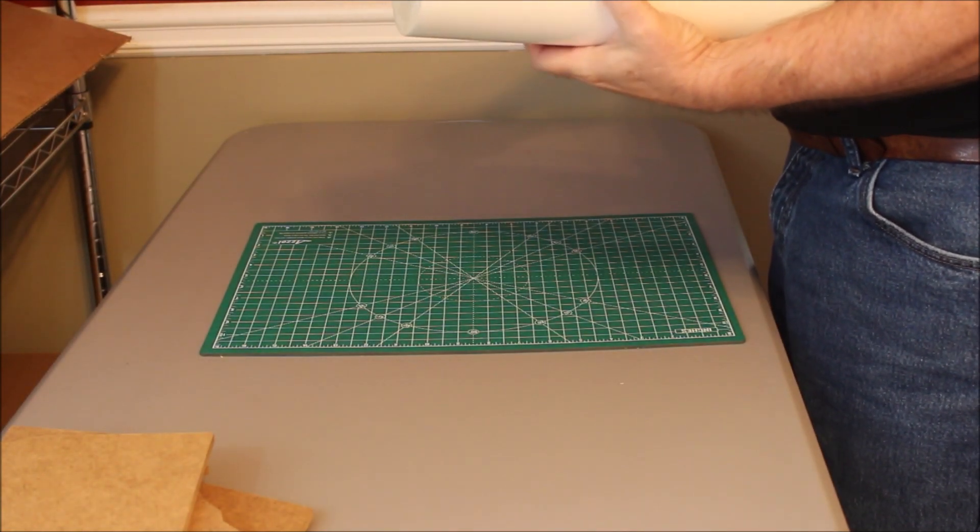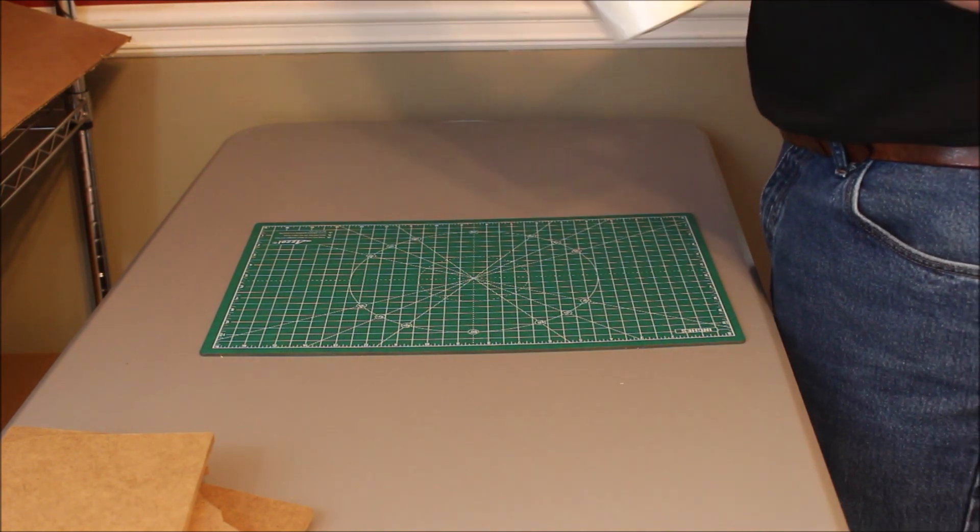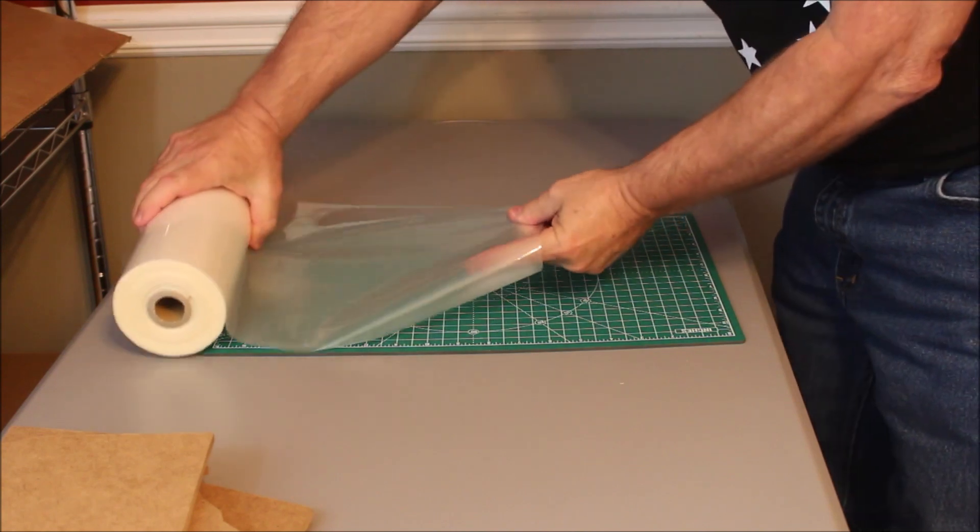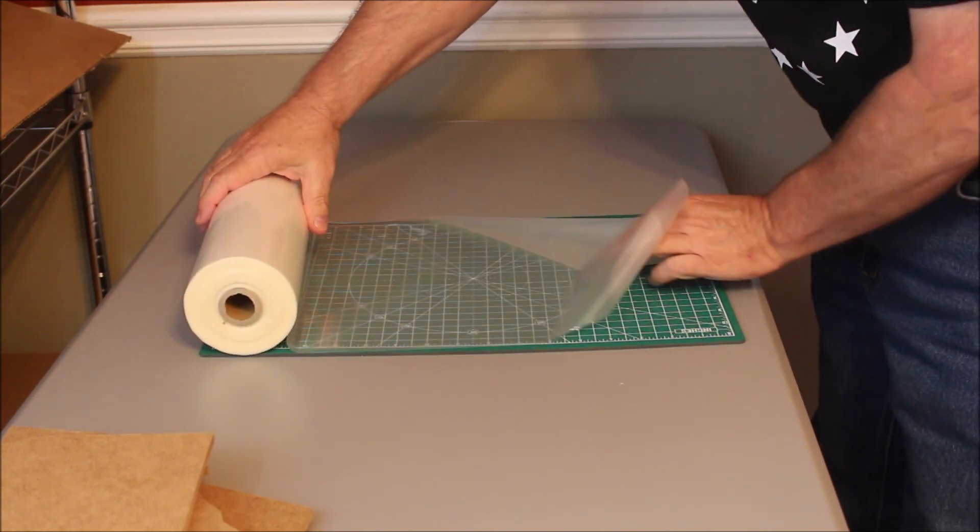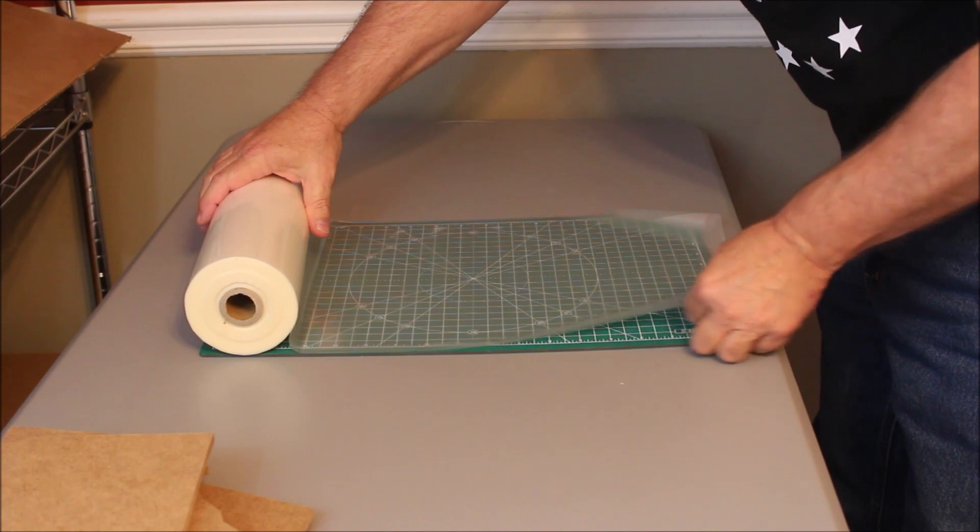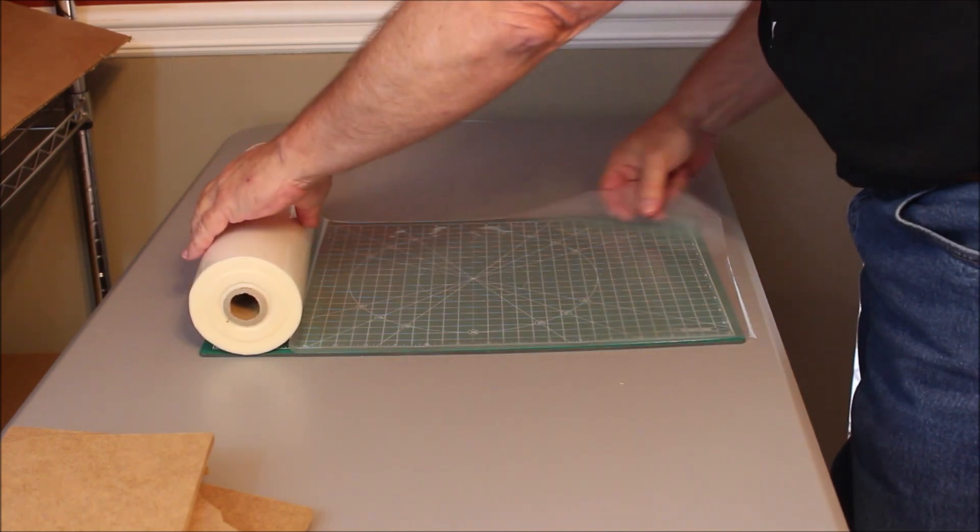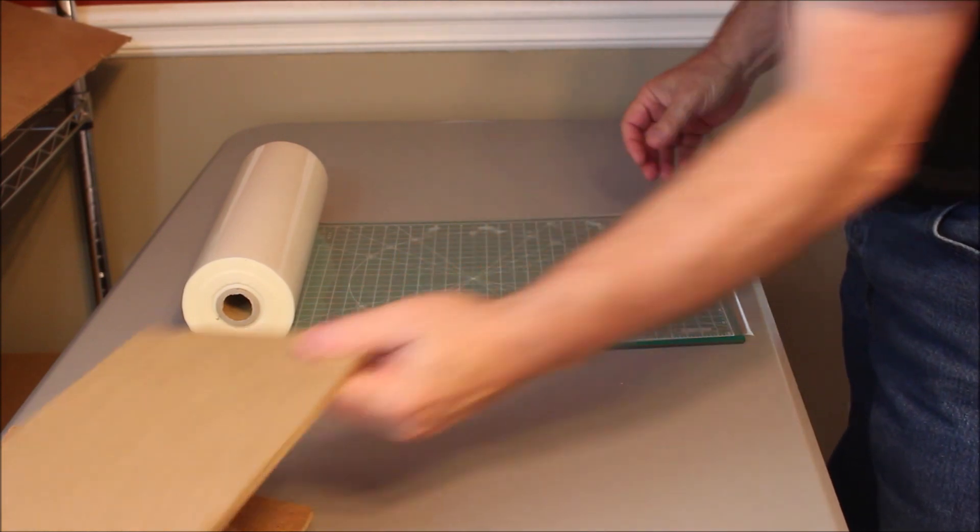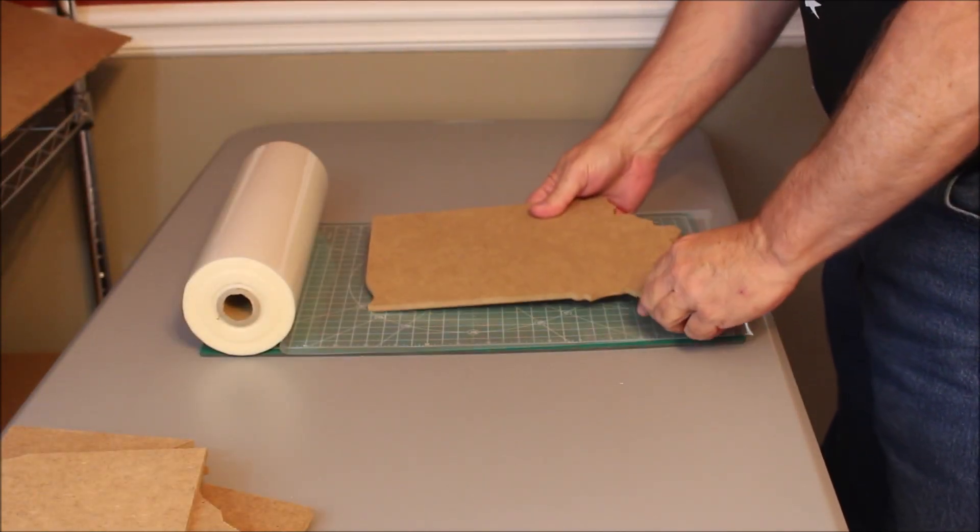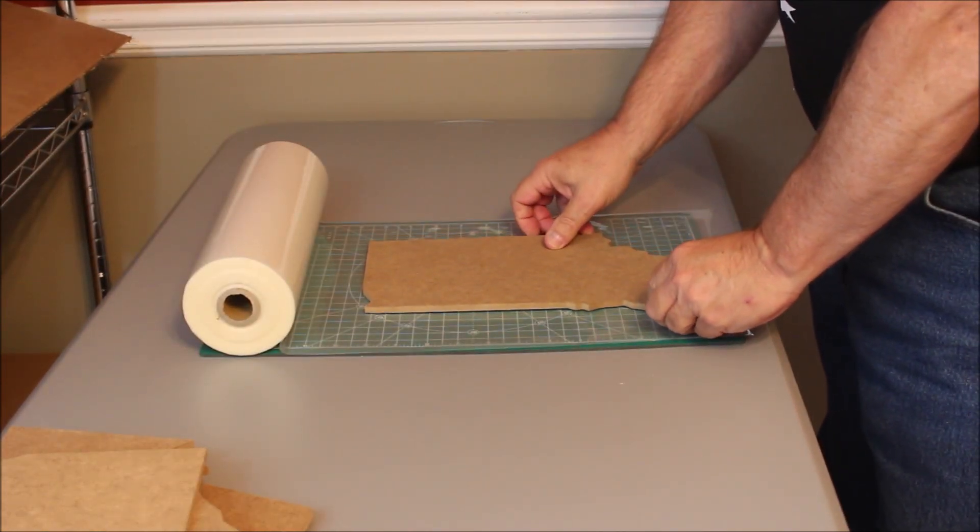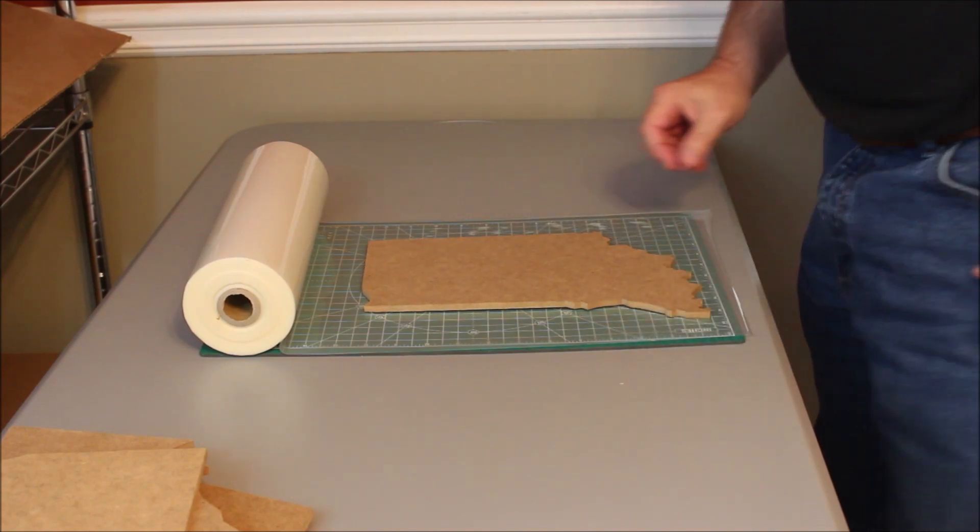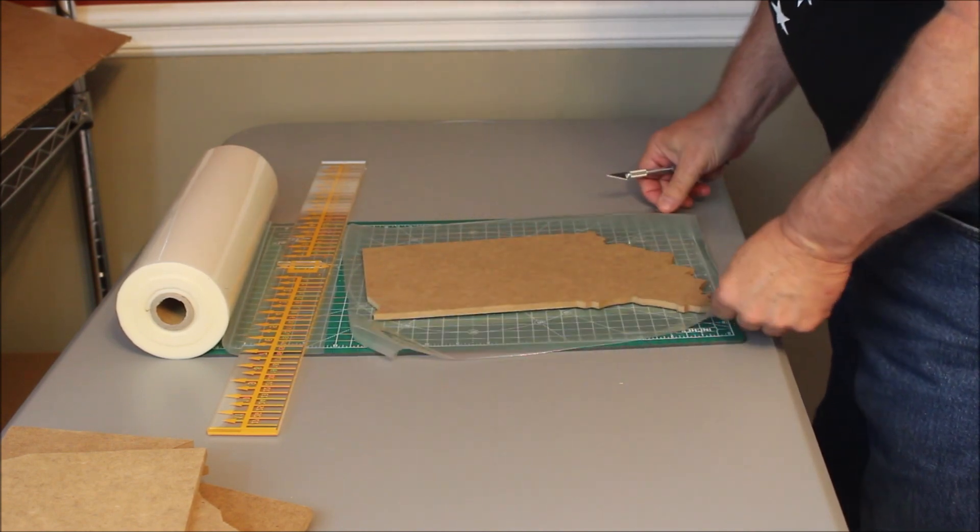Next, it was time to get the laminate film out and get the MDF ready to put on the heat press to attach this laminate to it. I set the Indiana blank down and just used my ruler and X-Acto knife to cut off a piece that was plenty big to cover the whole thing.